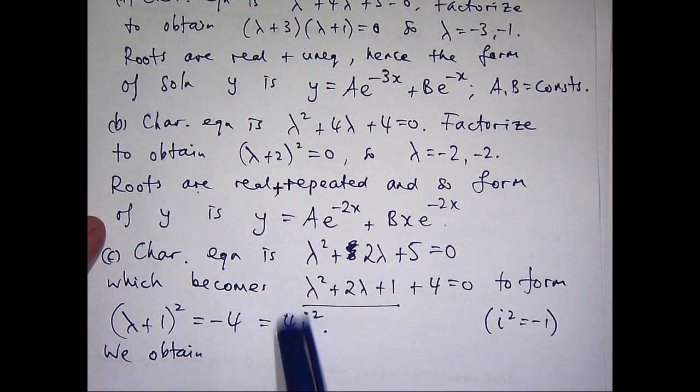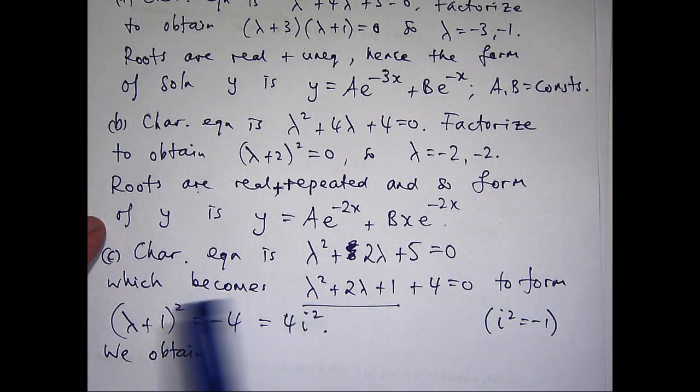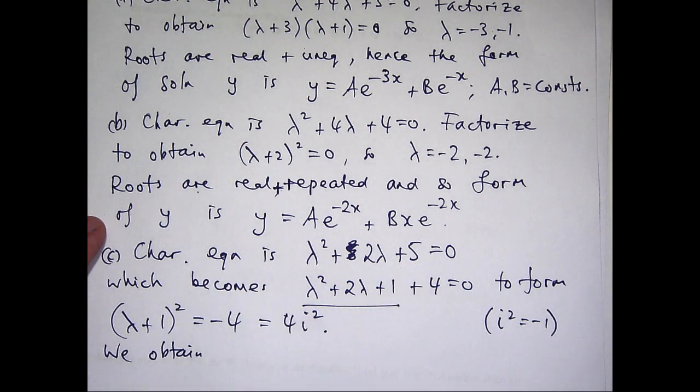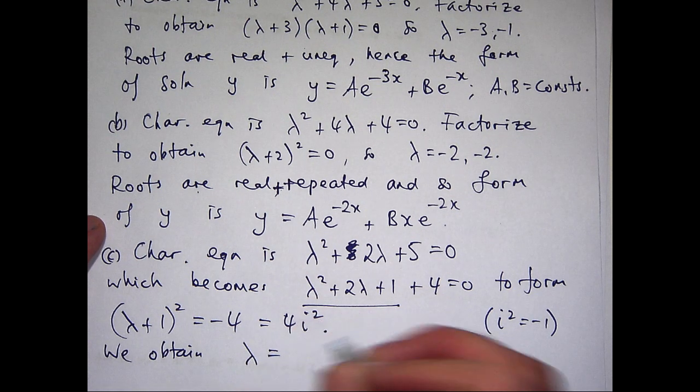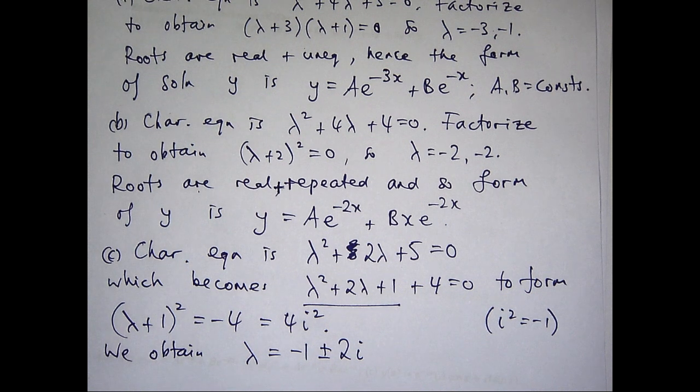So if I take the positive and negative square roots over here, I'm going to get positive and negative 2i. And when I bring that positive 1 to the other side, I'll get the following. So our roots are complex.